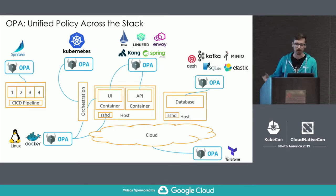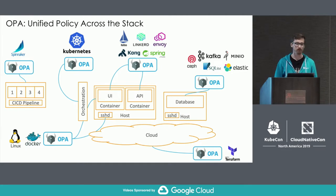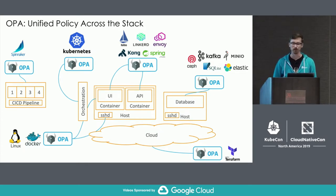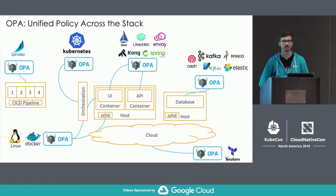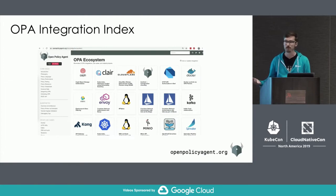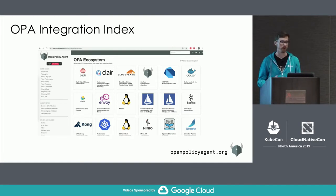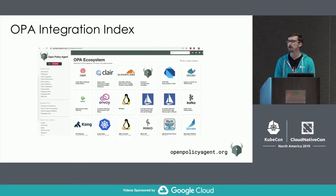Over the last couple of years we've seen a lot of different integrations get built for OPA — all examples where people are actually running them in production. People are using OPA for Kubernetes admission control, for microservice API authorization, to control access to sensitive data in data lake environments, in CI/CD pipelines to impose best practices on applications and configuration, and even to restrict SSH access to servers. OPA is really being used to unify policy across the stack. We recently launched an integration index on the OPA website to collect all known integrations in one place — because a lot of people think OPA is purpose-built for Kubernetes, but it's actually widely applicable.